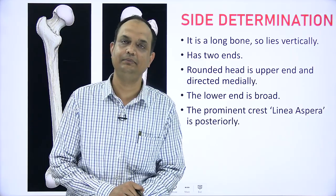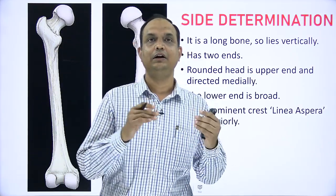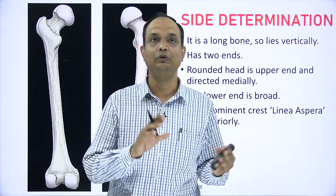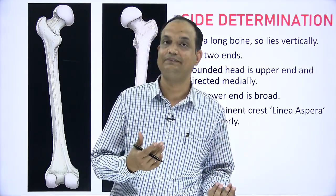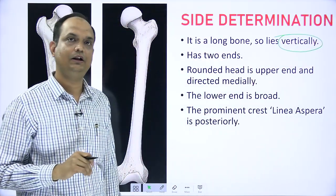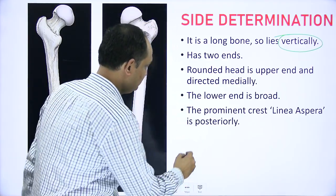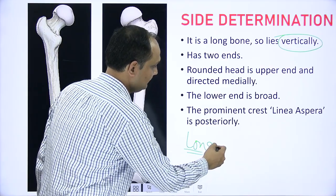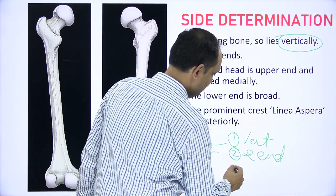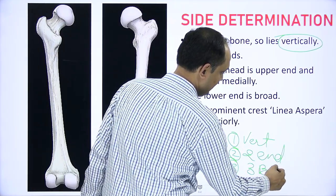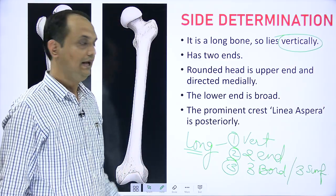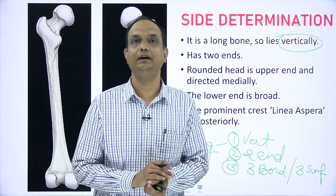How do we determine the side of the bone? There are right and left paired femurs in the human body, and you have to identify whether the bone belongs to the right or left side. First, keep the bone vertically, because long bones lie vertically in the body. Long bones have two ends, three borders, three surfaces, a medullary cavity, and take part in weight transmission.